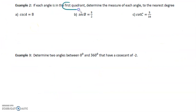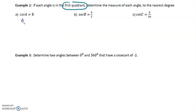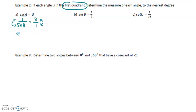If each angle is in the first quadrant, determine the measure of each angle to the nearest degree. We don't have cosecant, secant, or cotangent on our calculators, so we can't work with these trig ratios as they are. Cosecant a equals one over sine a, and this equals eight over one. So cosecant a is one over sine a — these are equivalent. How we can work with this is we can reciprocate both of them, so we're actually looking for sine a equals one over eight.